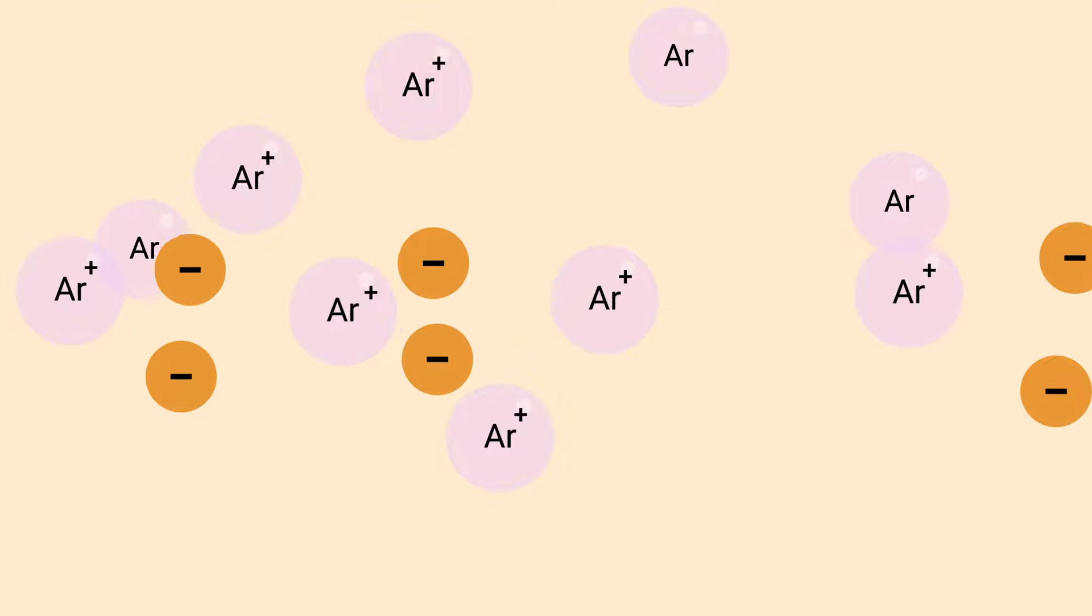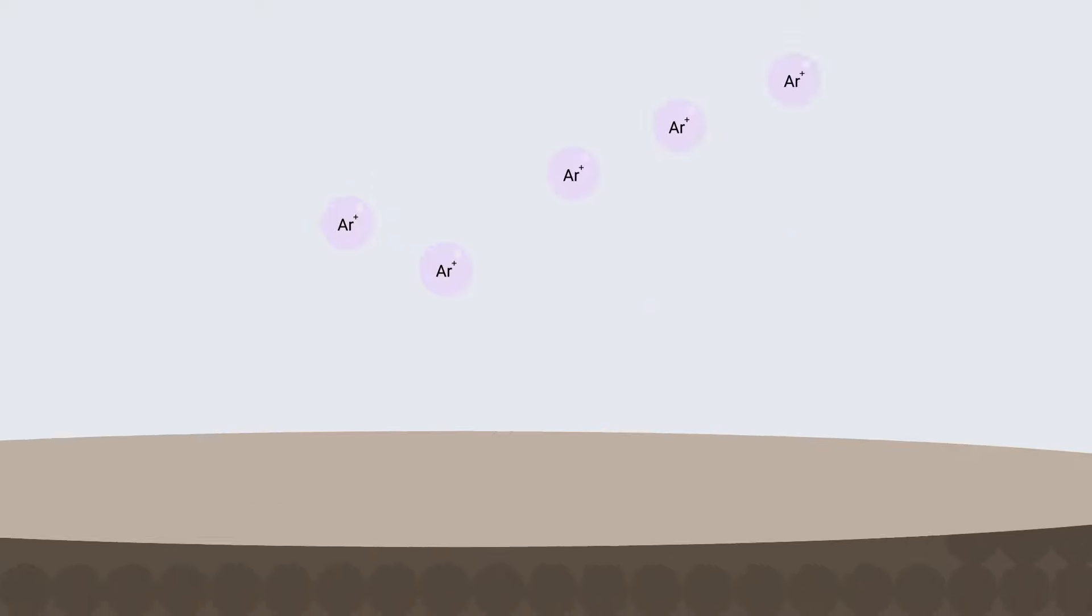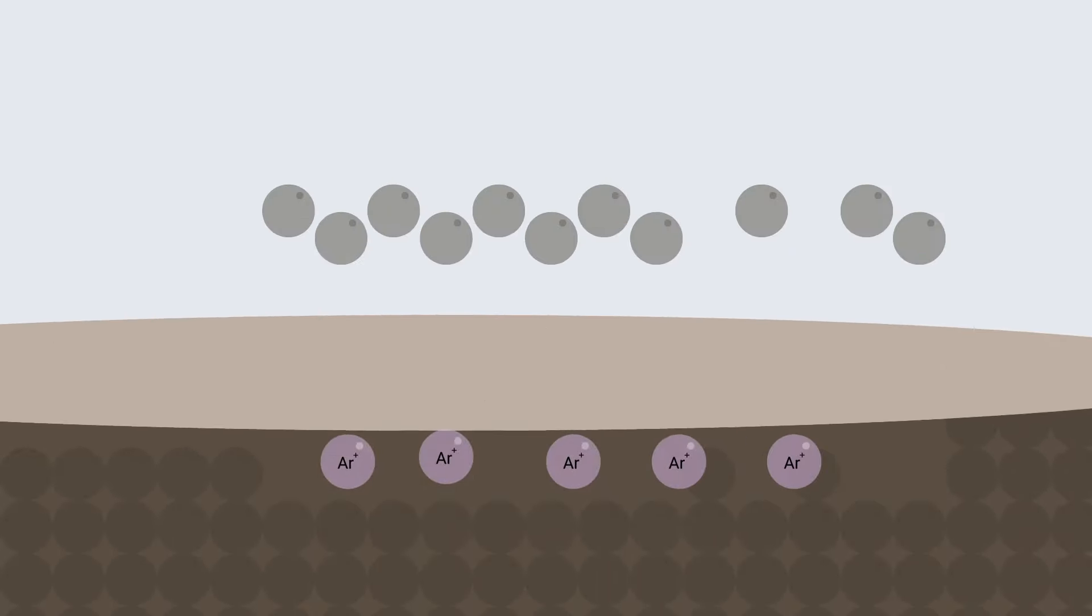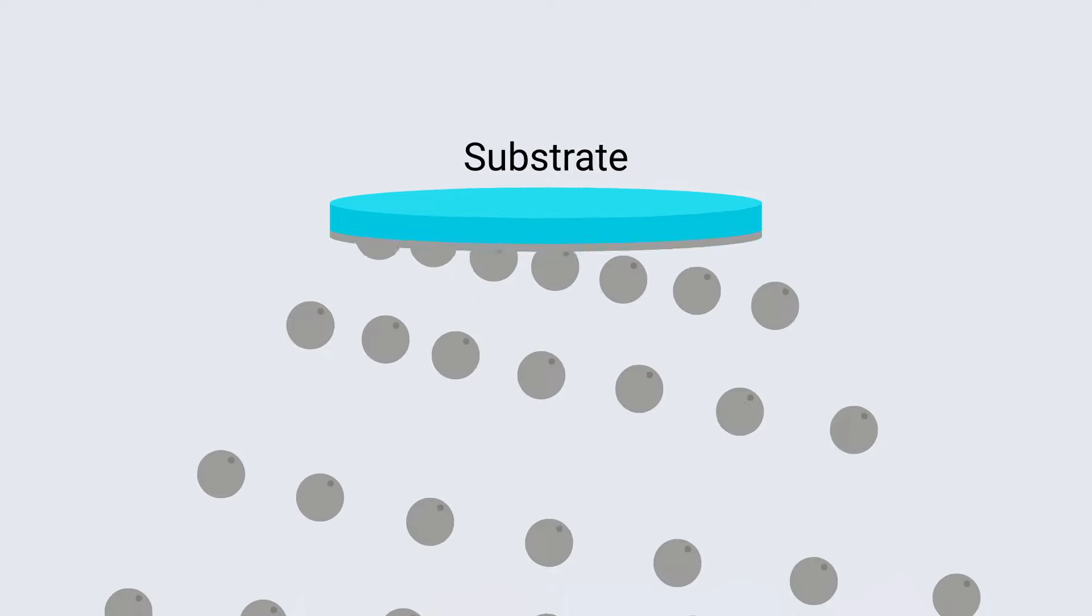This process continues until you have a plasma, and the negatively charged coating material attracts these positive ions, causing them to fly at such high velocity that the coating particles sputter off and travel over to the substrate.